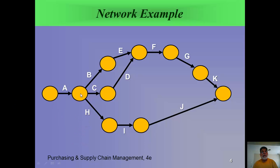Before you do C and before you do B, you have to do A. What we would do with this network is determine the amount of time it takes to do each activity and figure out which is the critical path — in other words, if something goes wrong in one of the activities, how much will it increase the total time of the project?